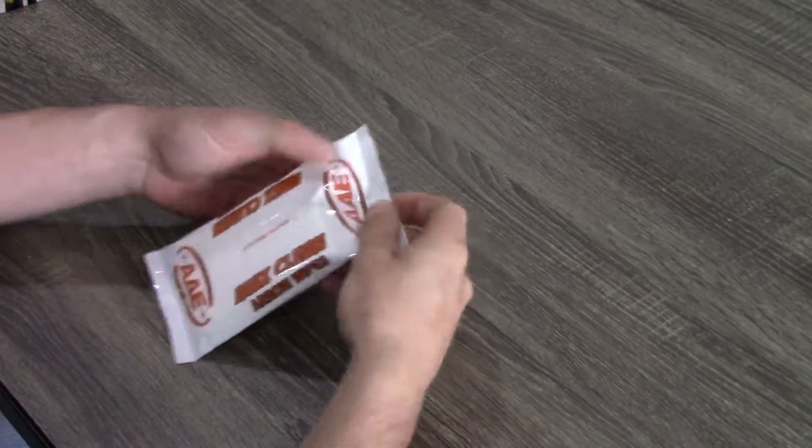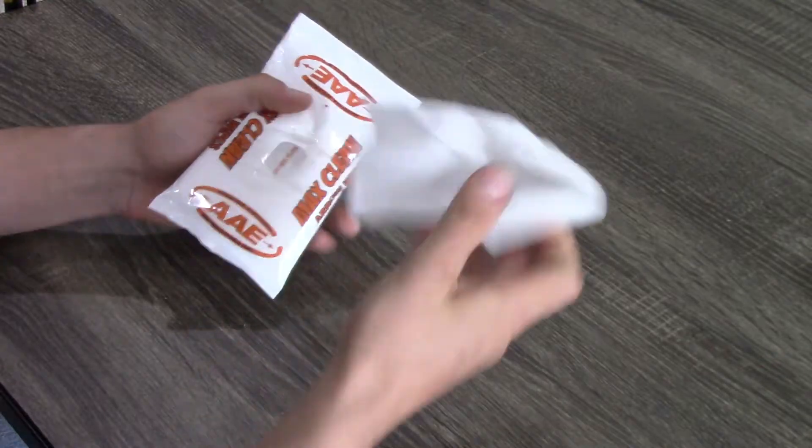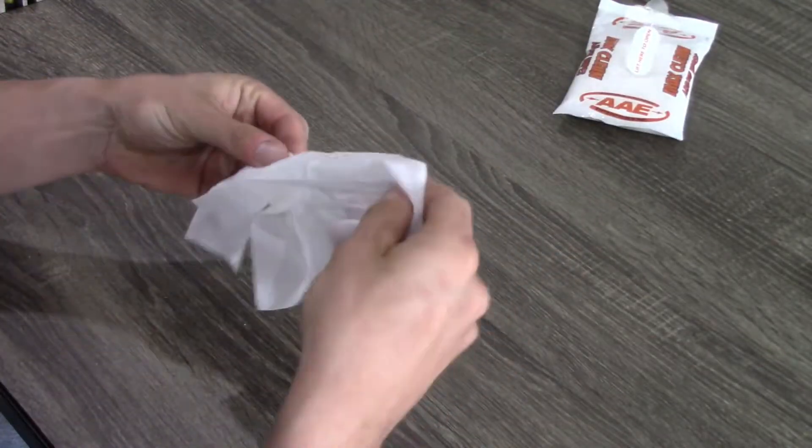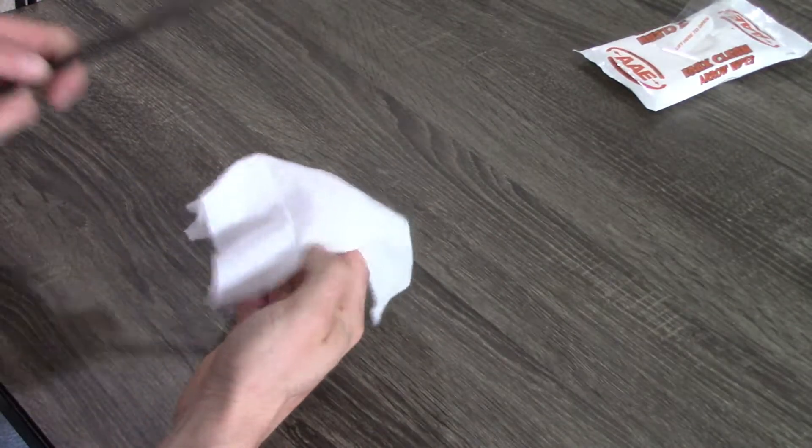After I've squared up the end, I'm going to clean the end of the shaft where the wrap is going to go. To do this, I'm going to use an AAE Max Clean Wipe. You can use just rubbing alcohol and a rag. However, I had these wipes.